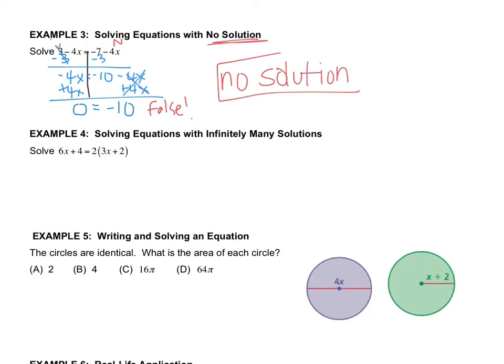Hopefully you're looking at that and saying that's absolutely ridiculous — 0 doesn't equal 10. So since this is false, there's no solution. The answer that you would write is no solution. Instead of writing x equals 3 or whatever you would put, we circle no solution, because you get this ridiculously false statement.